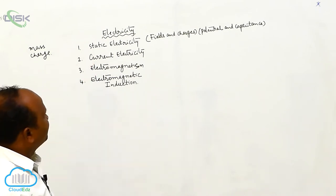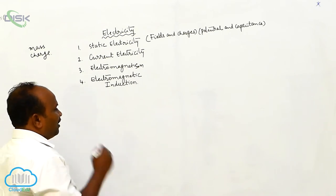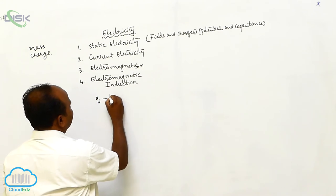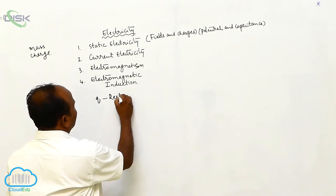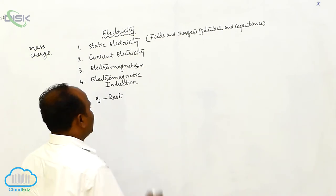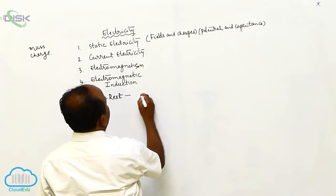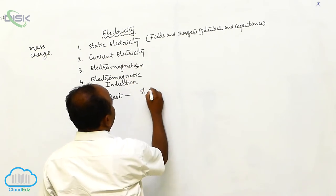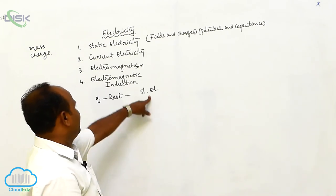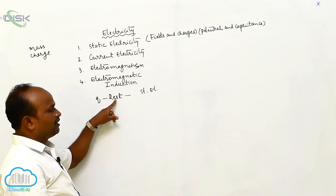What are the definitions of these four chapters? When the charge is at rest, the behavior of the charge is discussed in static electricity. Static electricity discusses the behavior of charge when the charge is at rest.